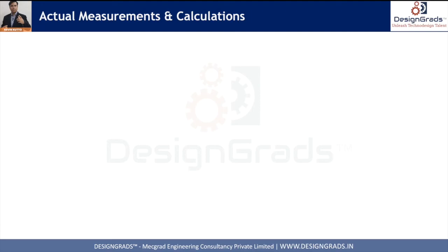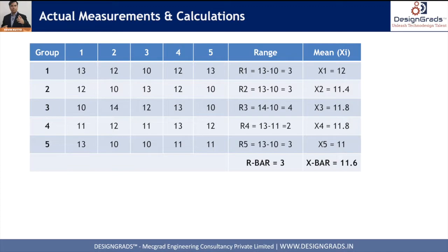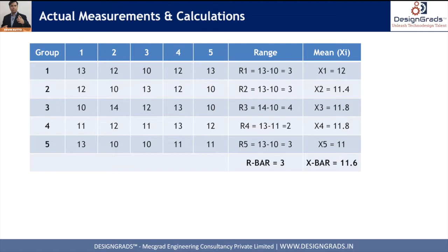Now let's go into the actual calculations. Looking at this table of actual measurements from the field, I have five groups here. In reality there should be more than 10 to 15 groups — the more groups, the better the results, since statistical calculations work better with larger sample sizes. For calculation purposes I've taken five groups, each with five samples, with rounded values such as 13, 12, 10, 12, 13.